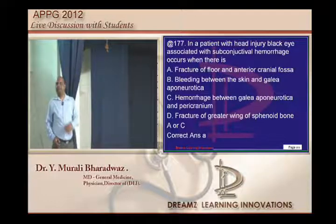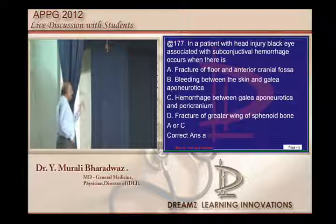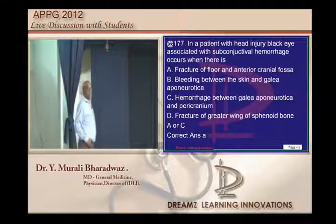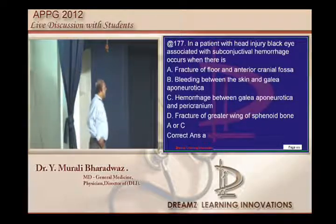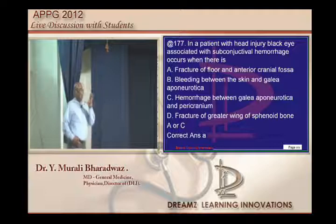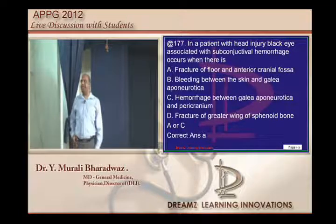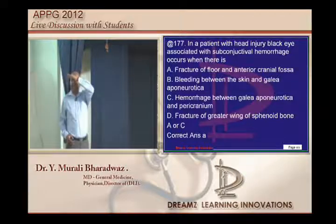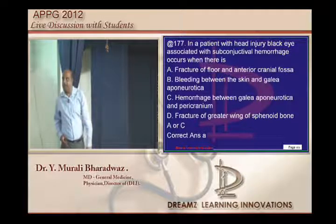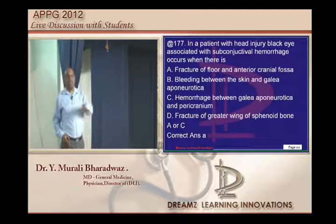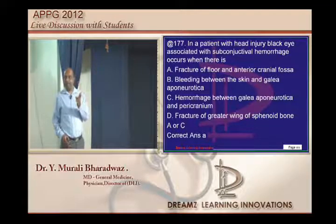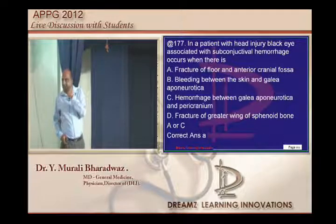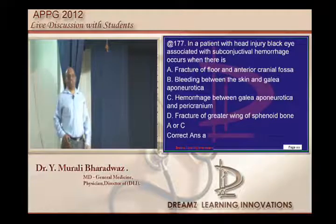Whereas an orbital fracture black eye is beefy red right from the beginning. In the black eye from orbital injury, there is conjunctival hemorrhage in the proper conjunctiva, whereas bleeding from anterior cranial fossa injury will be typically subconjunctival in location. So black eye with subconjunctival hemorrhage means it is anterior cranial fossa injury, not local orbital injury.